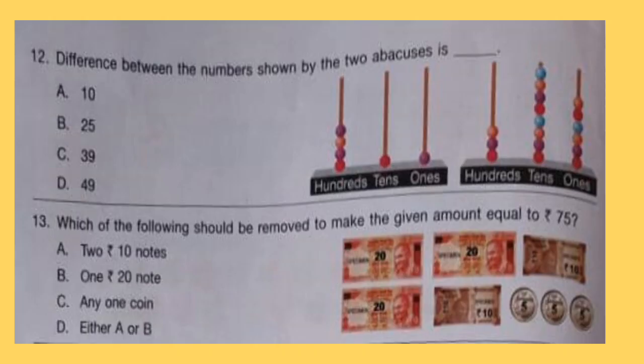Question 12: Difference between the numbers shown by the two abacuses is dash. Question 13: Which of the following should be removed to make the given amount equal to 75?